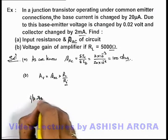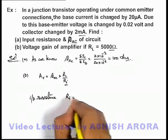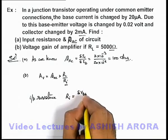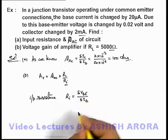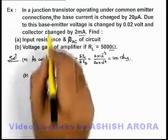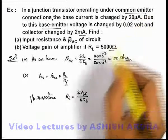And input resistance R_I can be simply written as delta V_BE over delta I_B, because for a common emitter, we can write common emitter connections.